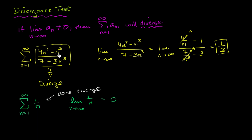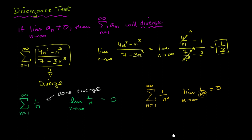If the limit as n approaches infinity goes to zero, that thing still might diverge — it doesn't necessarily mean it converges. There are things that do converge where terms approach zero. For example, the sum from n equals one to infinity of one over n squared: the limit as n approaches infinity of one over n squared does equal zero, so it fails the divergence test. You don't know for sure that this converges — it still might diverge. It does turn out this thing does converge, but not because it fails the divergence test. We have to use a different test to show it converges, just as we need a different test to show the harmonic series diverges.